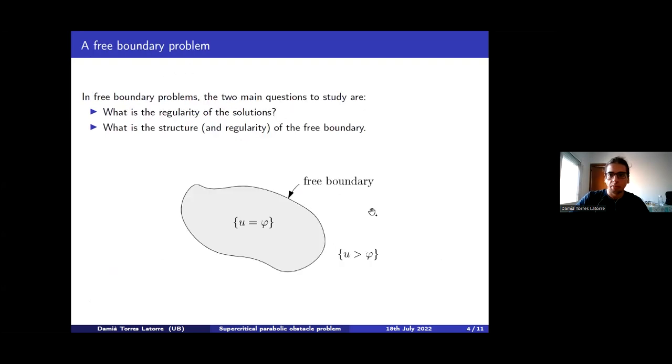So this is a free boundary problem. Free boundary problem means there are two questions in regularity theory. First one is what is the regularity of the solution? Second one is what I said before. I have a set where my solution is equal to phi. I have another set when my solution is bigger than phi. And solution solves a PDE outside of the set where it's like touching phi. This is called the obstacle problem because you have to imagine that I have a solution U. This is placed above an obstacle phi. And it can lie over the obstacle, which is called contact set because the solution coincides with the obstacle. Or it can be strictly above and then the solution needs to behave like the solution of a PDE.